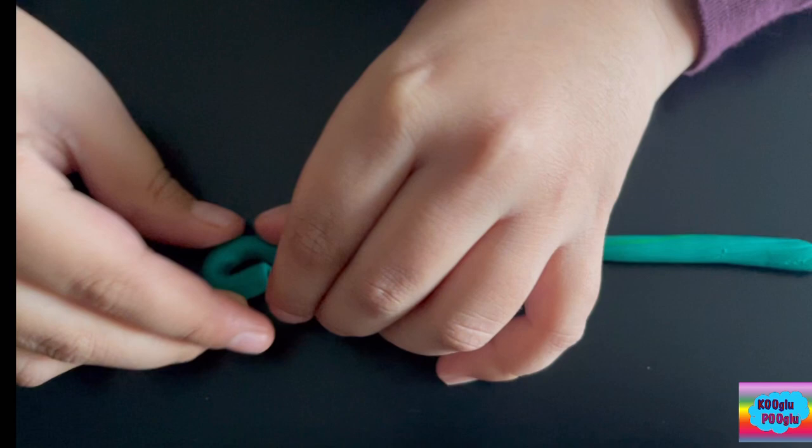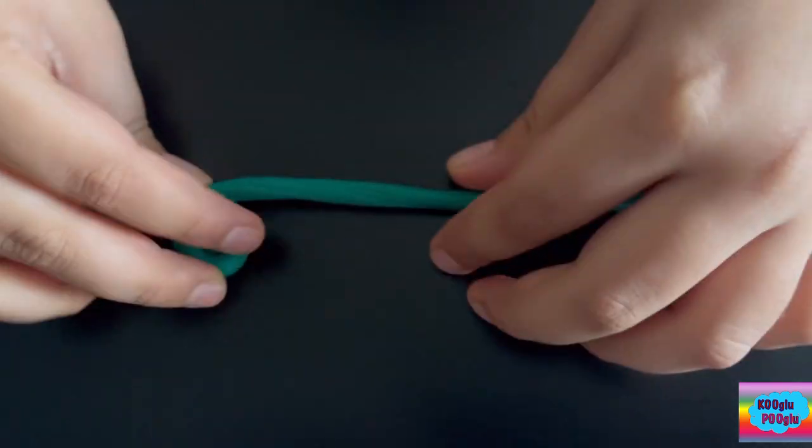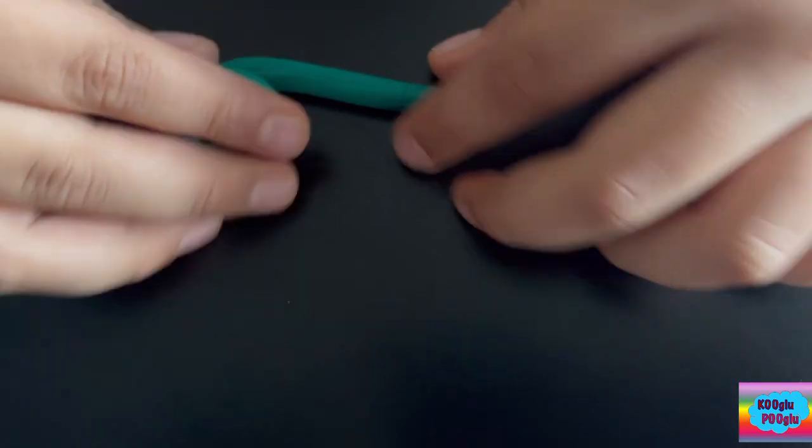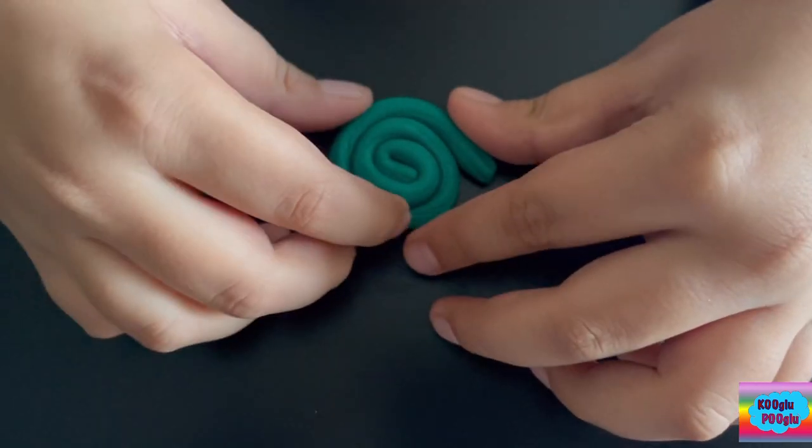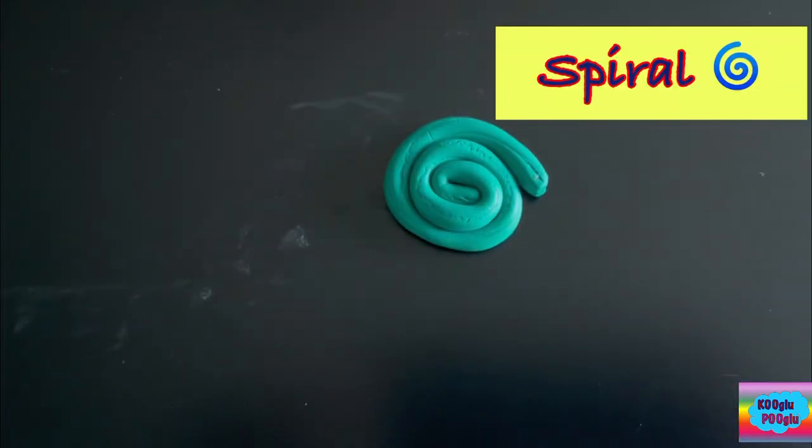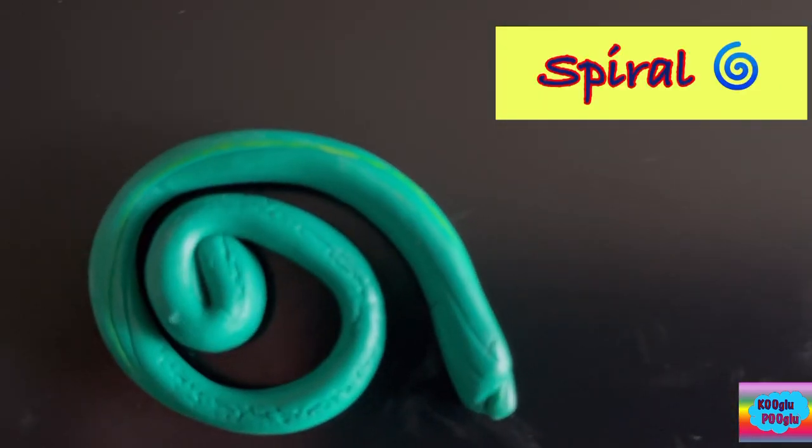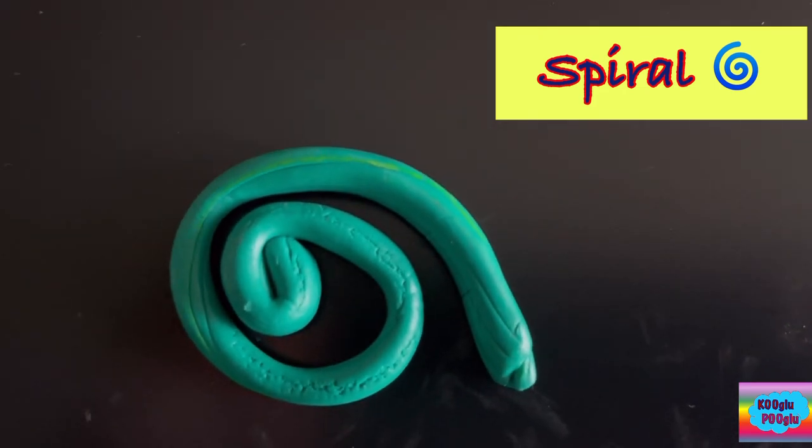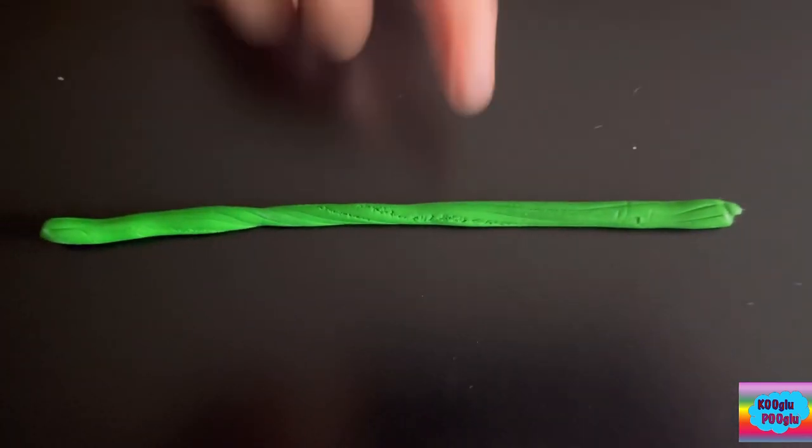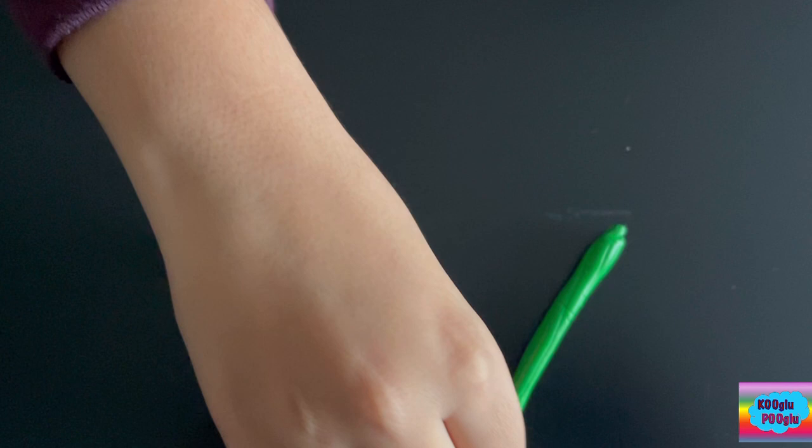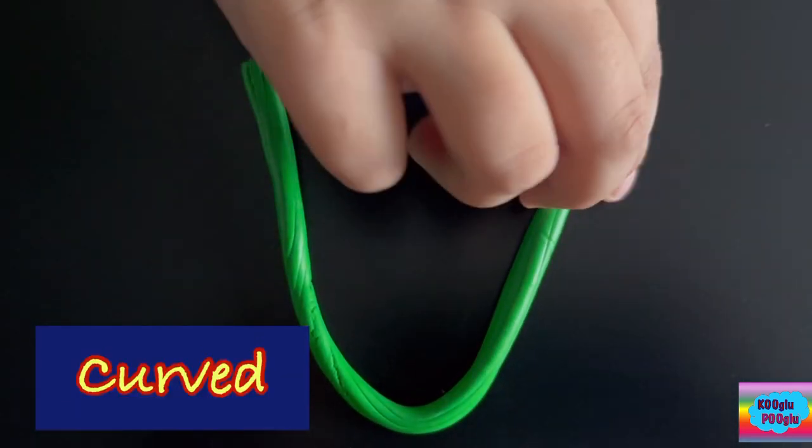We're going to make a spiral. Yay, I did it. If you don't tightly close it, then this is what you get. Here we have green, and we're going to make a curved. There we go. There's one curved.